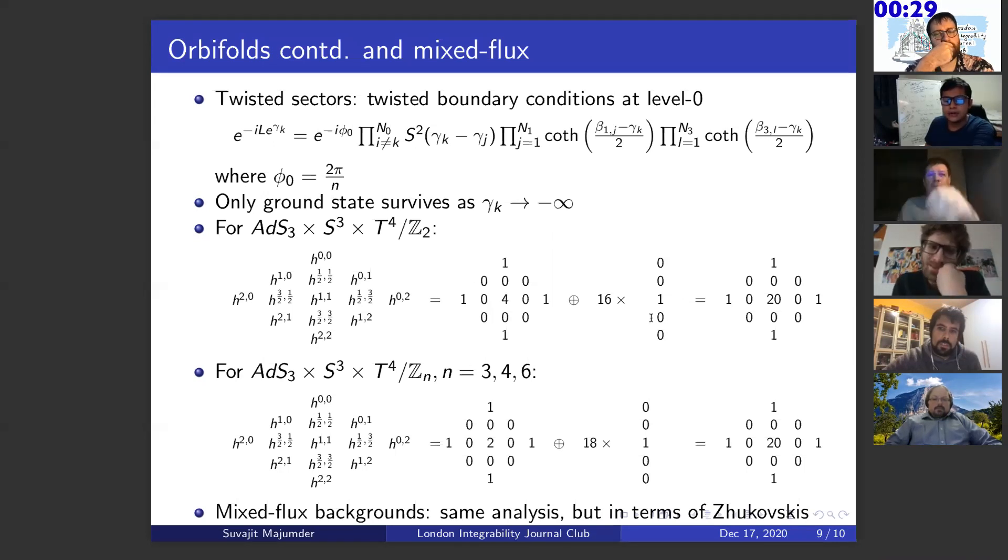For T^4 mod Z_2, we see that we end up with this contribution from the untwisted sector. And this amount of contribution, 16 are the number of fixed points, each contributing 1 to H^{1,1}. And we get this Hodge diamond. And similarly, for T^4, N equals 3, 4, or 6, we have a different untwisted sector. But the twisted sector is such that we end up with the same K3 Hodge diamond here also.